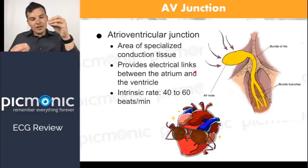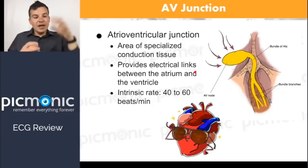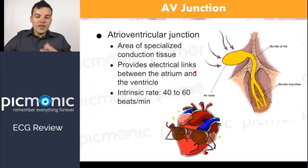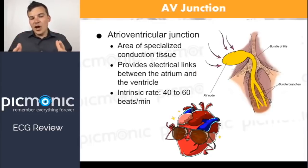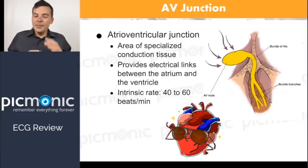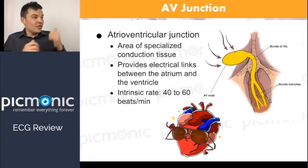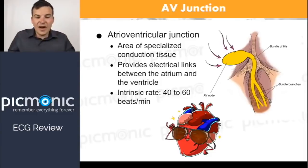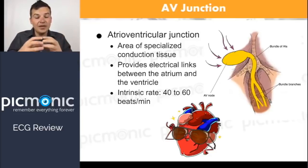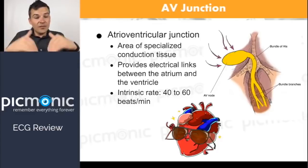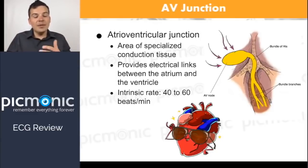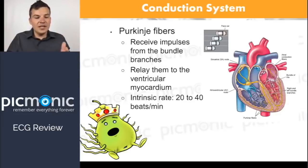The AV node is the second spot that receives electricity. If the SA node fails or there's a heart block and the conduction pathway is blocked, the AV node can take over. One of the great properties of cardiac cells is that they're automatic — they can conduct themselves. If one cardiac cell is electrified, it fires and conducts to the next. That's where you see all those weird problems, like inversions of the QRS complex, because of identifiable patterns we can track on the ECG.